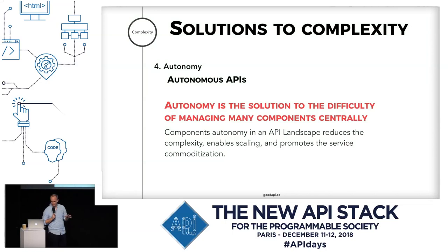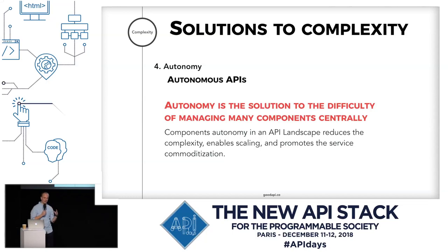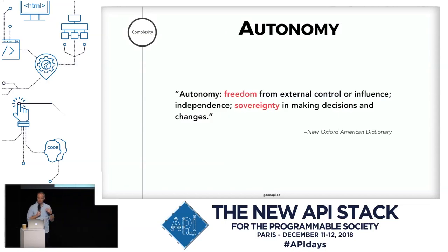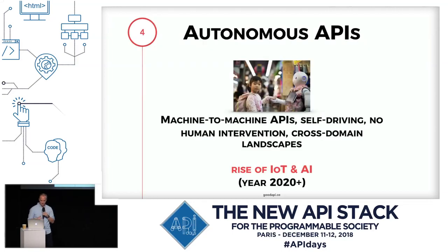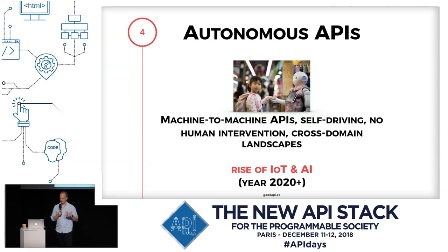The final solution I propose is autonomy of the components, because that solves the difficulty of managing components centrally. We need to let go of the idea that we can manage an API landscape centrally — that's not going to work and not going to scale. Autonomy stands for freedom of external control — sovereignty in making decisions and changes. And as such, we are about to see machine-to-machine APIs: APIs with self-driving clients that don't need human intervention and span cross-domains and landscapes.